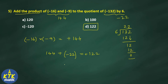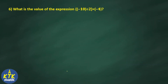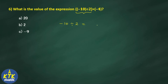Question number 6: what is the value of the expression (minus 10 divided by 2) multiplied by minus 4? Brackets are given clearly, so solve the bracket first. Minus 10 divided by 2 gives minus 5. Then minus 5 multiplied by minus 4 equals 20. It's a very simple question — sometimes questions look hard but when you solve step by step the answer comes easily.